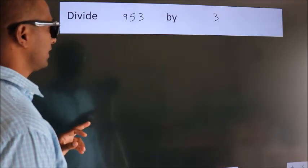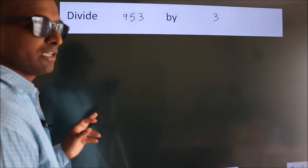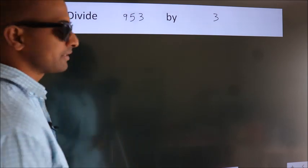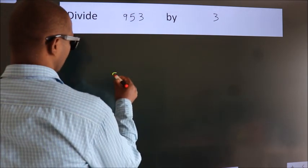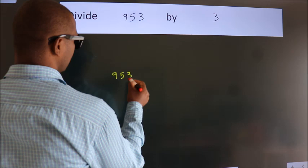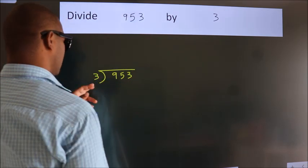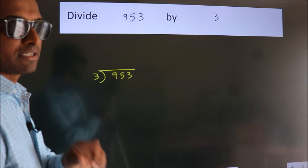Divide 953 by 3. To do this division, we should frame it in this way: 953 here, 3 here. This is your step 1.